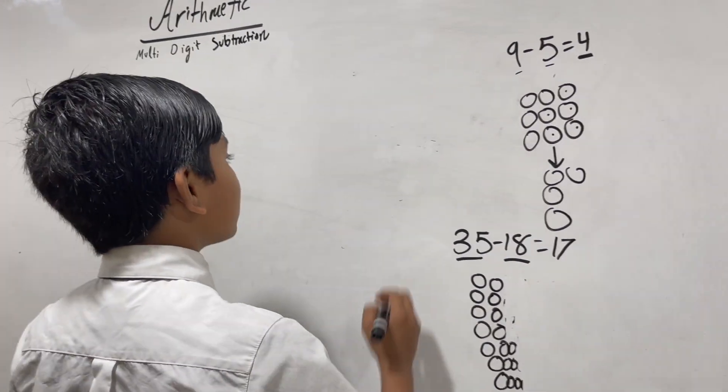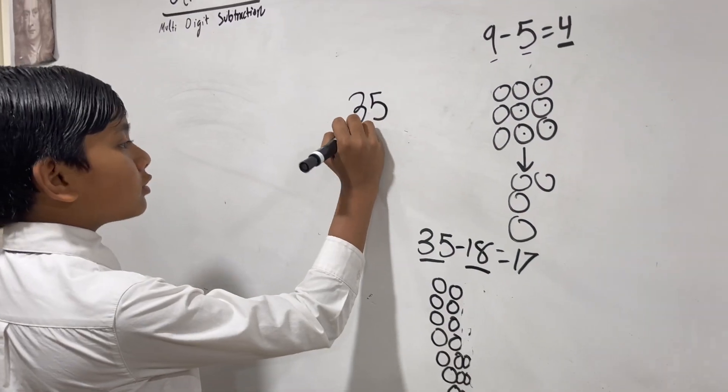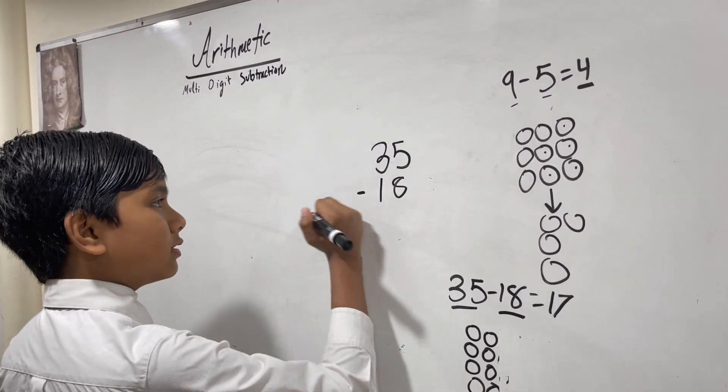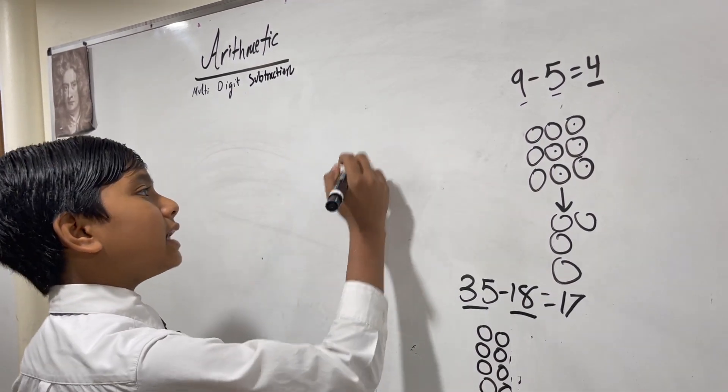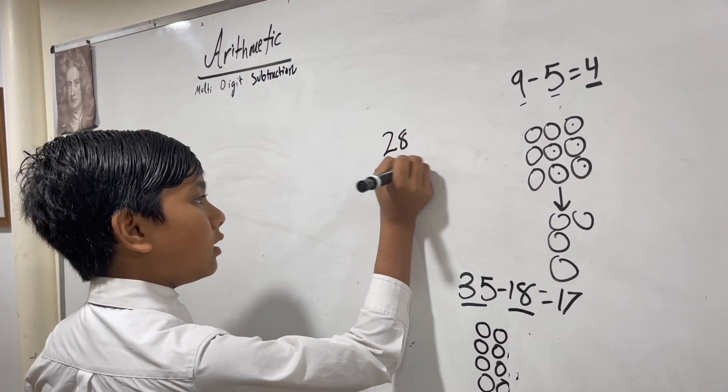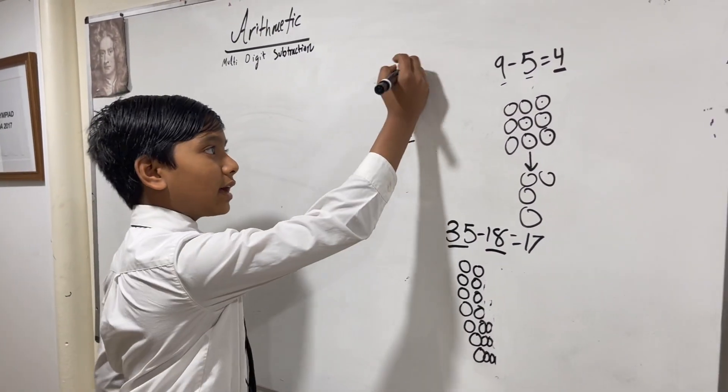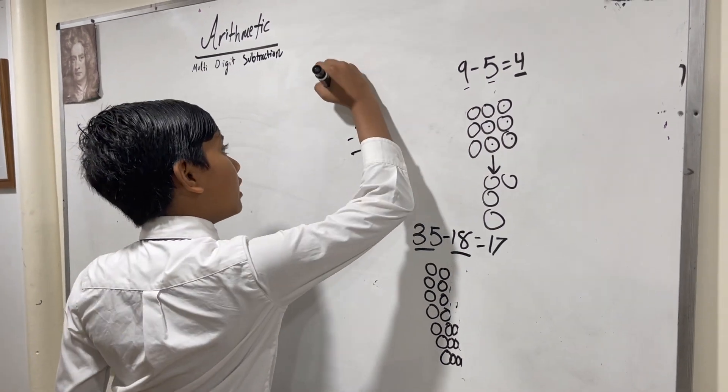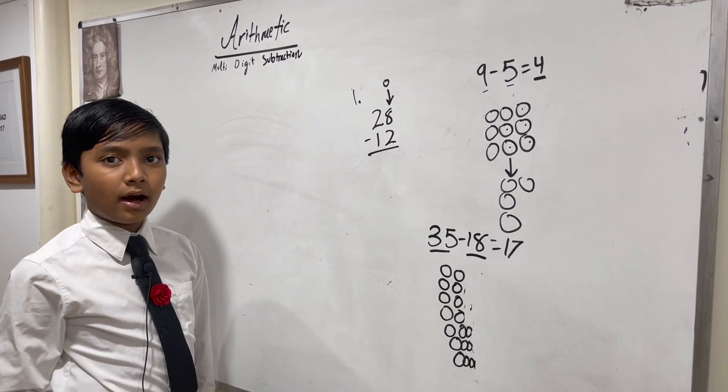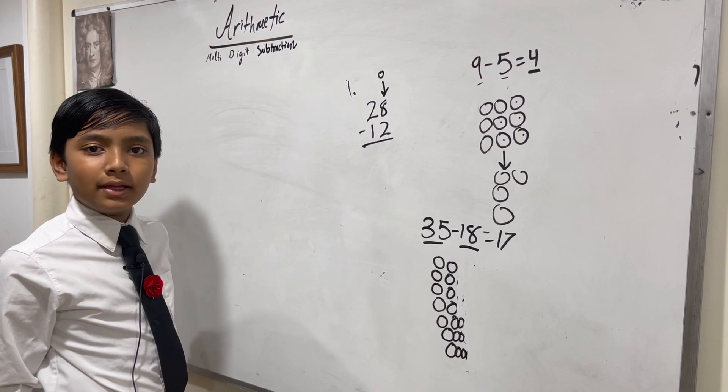Let's take these two numbers and stack them on top of each other. So 35 minus 18—you might want to start with an easier one just to get used to this. Let's say we have 28 minus 12. Remember to stack them just like we did in our addition video, so that the ones place is perfectly aligned. The tens place and all other places after that will be aligned because of that.